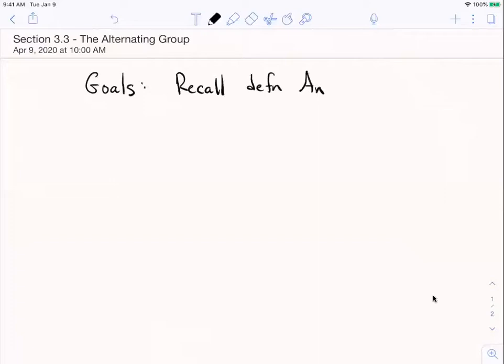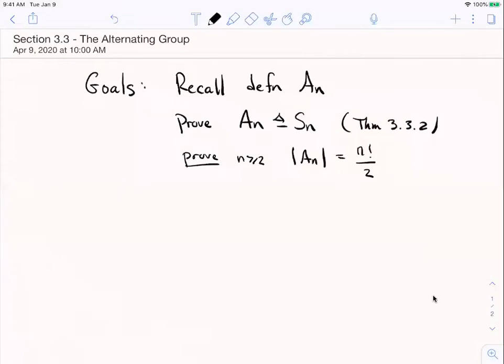I want to prove that the alternating group is a normal subgroup of Sn. That's your author's theorem 3.3.2. So we'll state it and prove it below. I also want to prove that as long as n is at least 2, that the number of elements in the alternating group is always half of that in the symmetric group. And that's theorem 3.3.3.